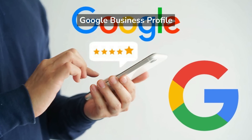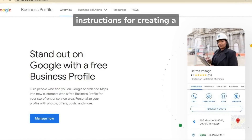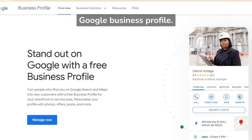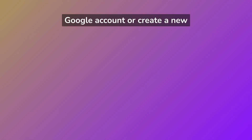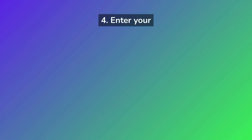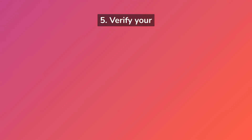Setting up a Google Business Profile. Step-by-step instructions: 1. Go to google.com/business. 2. Click on 'Start now.' 3. Sign into your Google account or create a new one. 4. Enter your business name and address. 5. Verify your business by phone or mail. 6. Complete the profile by adding your business hours, contact information, and photos. It's crucial to provide accurate and complete information when setting up your Google Business Profile. According to a survey by Moz, businesses that have complete and accurate information on their Google My Business listing are more likely to be considered reputable by consumers.